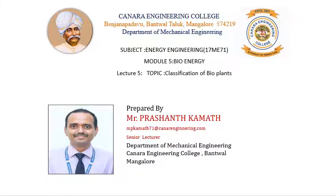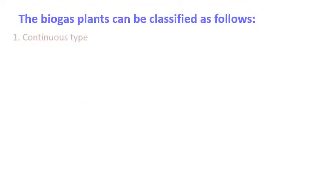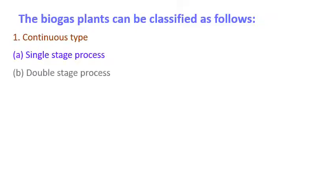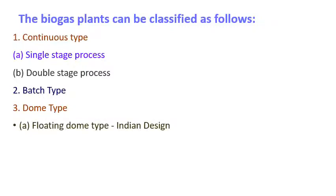Welcome to this session on bioenergy. Let us understand the different classifications of biogas plants. The first classification is the continuous type, which includes single stage and double stage processes. The second is the batch type, which includes the dome type — the Indian style floating dome — and the fixed dome type, which is the Chinese design.